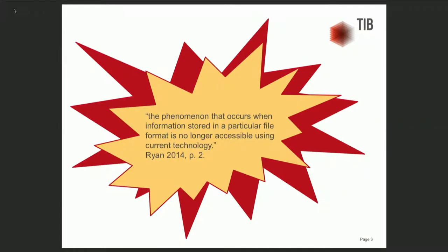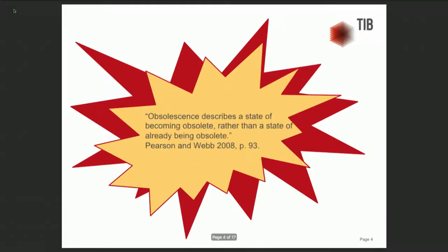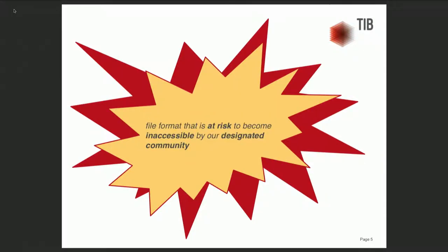The first definition: obsolescence is the phenomenon that occurs when information stored in a particular file format is no longer accessible using current technology. A second definition describes obsolescence as a state of becoming obsolete rather than a state of already being obsolete, showing that we need to act before the information is inaccessible. I like to think of obsolete file formats as file formats that are at risk to become inaccessible by our designated community.